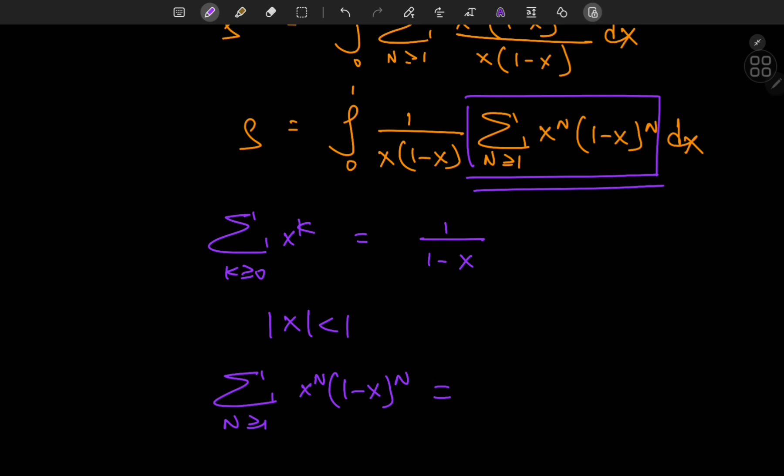So that means we have a convergent geometric series and this sums out to, now you won't have 1 in the numerator now because you're starting your sum at 1. So we have x times 1 minus x instead, that's the first term, divided by 1 minus the common ratio which is x times 1 minus x.